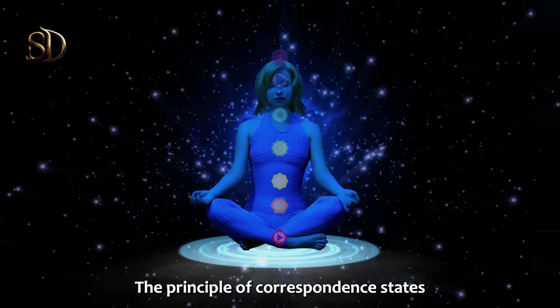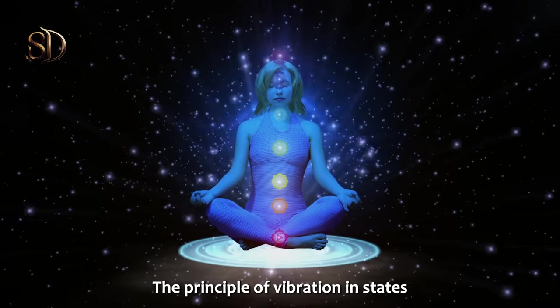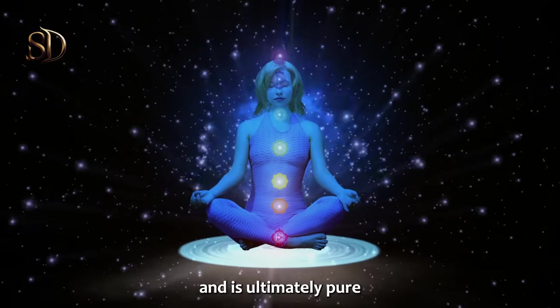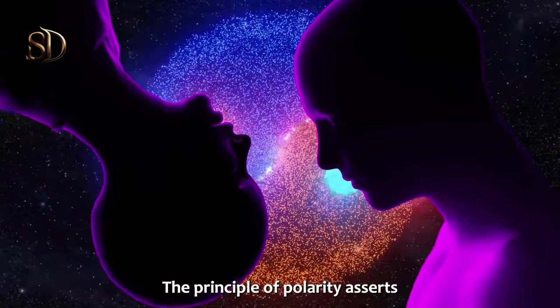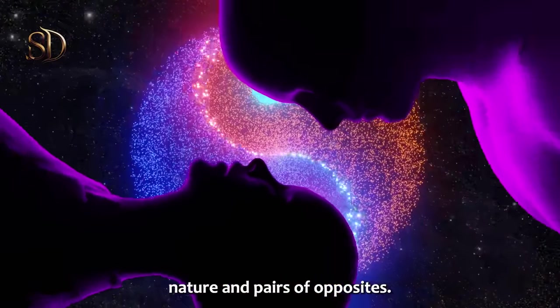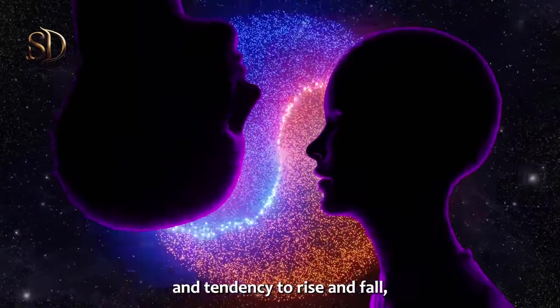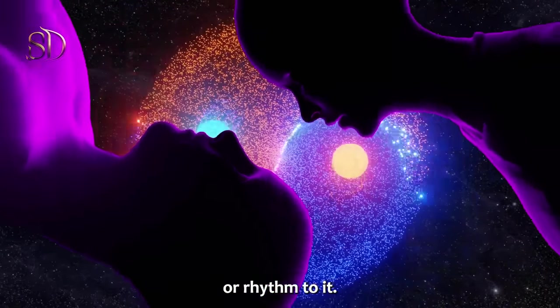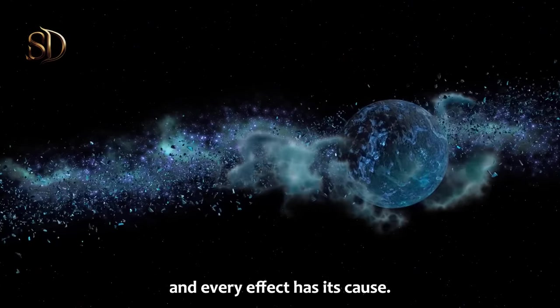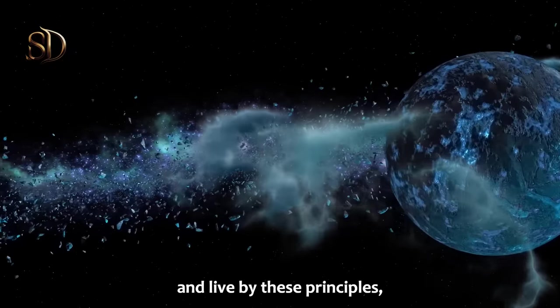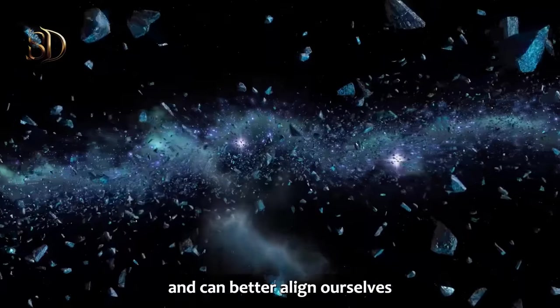The principle of mentalism states that everything in creation is a manifestation of mind. The principle of correspondence states that what is above is like that which is below, and vice versa. The principle of vibration states that everything vibrates and is ultimately pure vibratory energy manifesting in different forms and frequencies. The principle of polarity states that everything has a natural flow and tendency to rise and fall, and everything has a swing or rhythm to it. The principle of cause and effect asserts that every cause has its effect and every effect has its cause. When we understand and live by these principles, we gain a deep understanding of the workings of the universe and can better align ourselves with its natural flow.